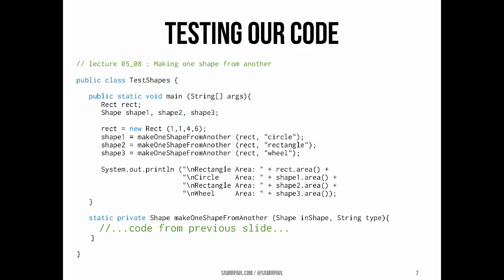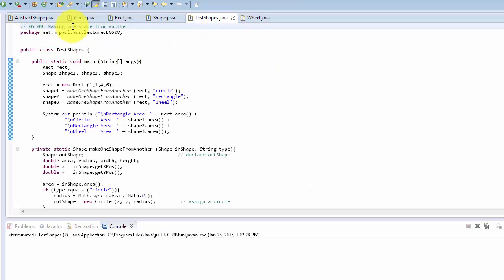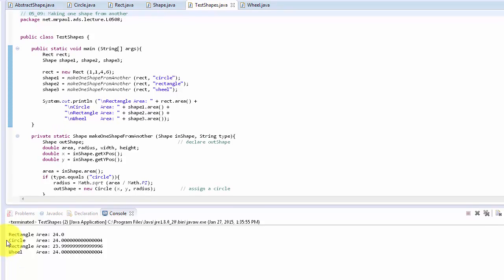Here I've got this set up in Eclipse, with the testShapes class, the main method, and the make-one-shape-from-another method we just looked at. In main, we create a rect, three shape variables — shape one, shape two, shape three — and instantiate the rect with its x, y, length, and width. We call make-one-shape-from-another using circle, rectangle, and wheel, storing results in shape one, shape two, shape three. If I click run, we can see the four shapes print out their areas: 24, 24, 23.9999, and 24 — a little floating-point imprecision, but the methods worked as expected.